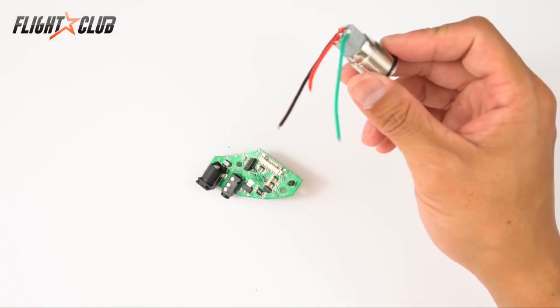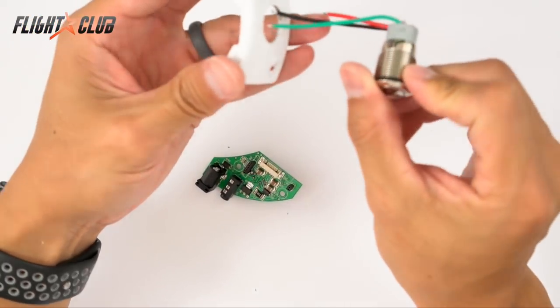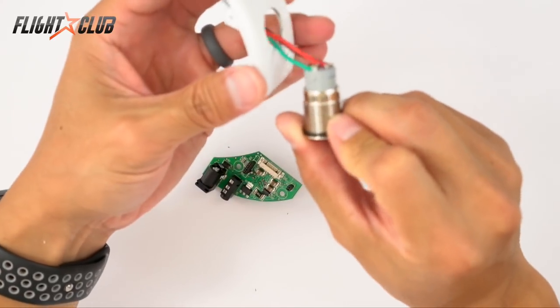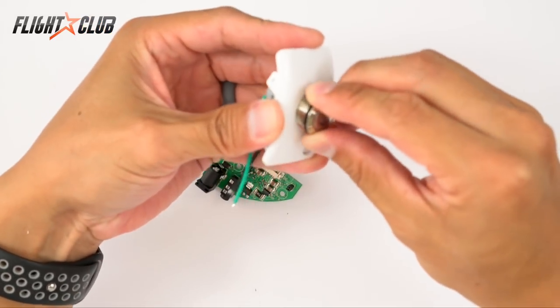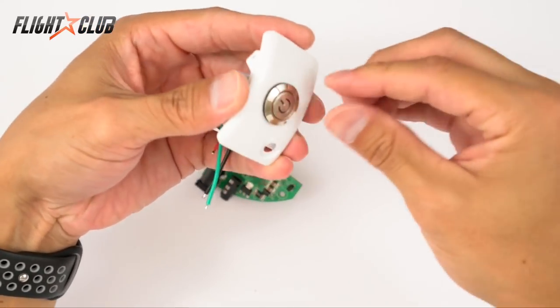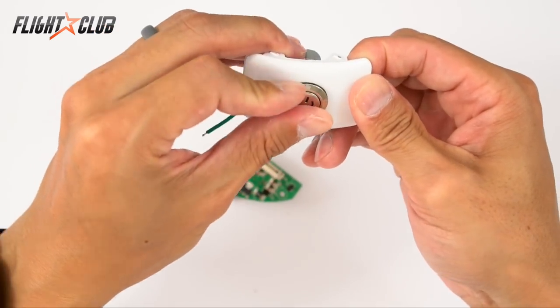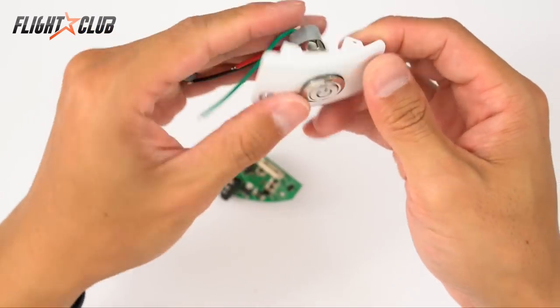So before you do that, just make sure you push the wires and the button through this plate first. Because if you don't do that, you won't be able to get the switch in here when it's soldered onto the board.